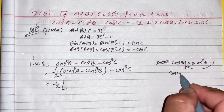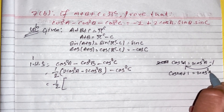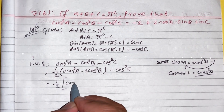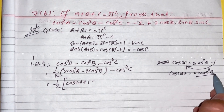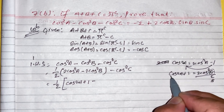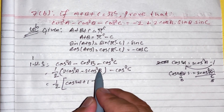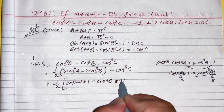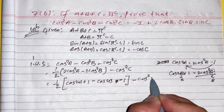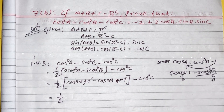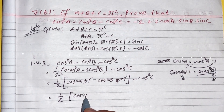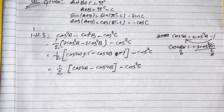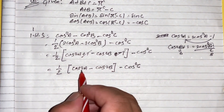Similarly 2 cos square b equals cos 2b plus 1. After expanding and cancelling the constant terms, we obtain one-half times cos 2a minus cos 2b, minus cos square c. Applying the difference formula: cos 2a minus cos 2b equals 2 sin(a+b) sin(b minus a).